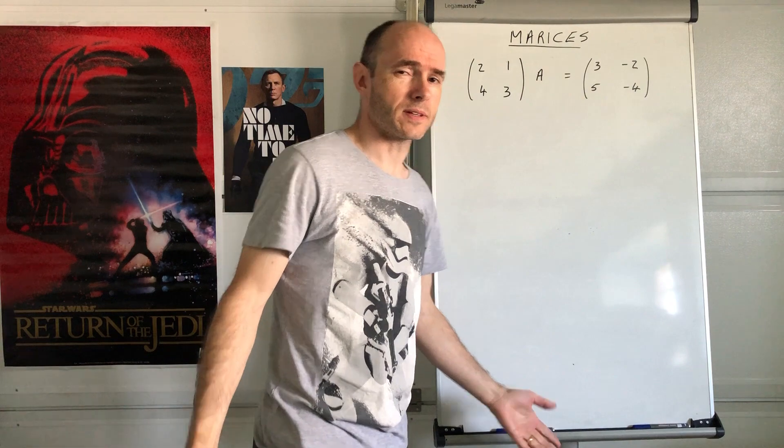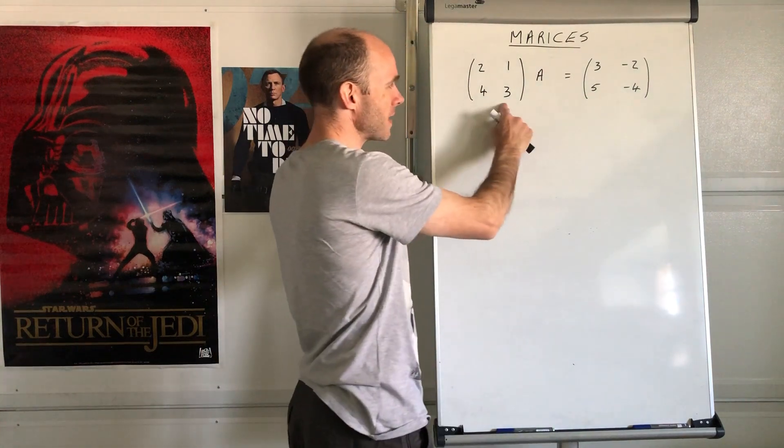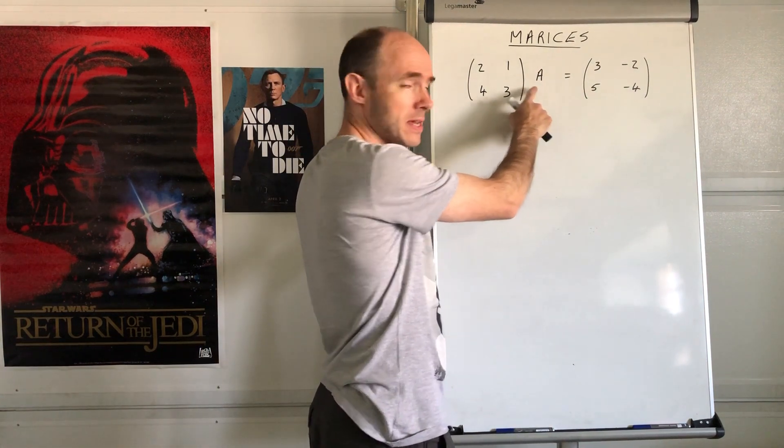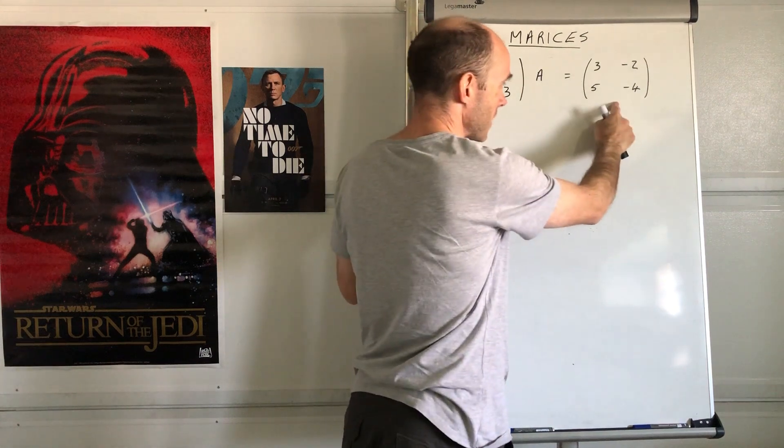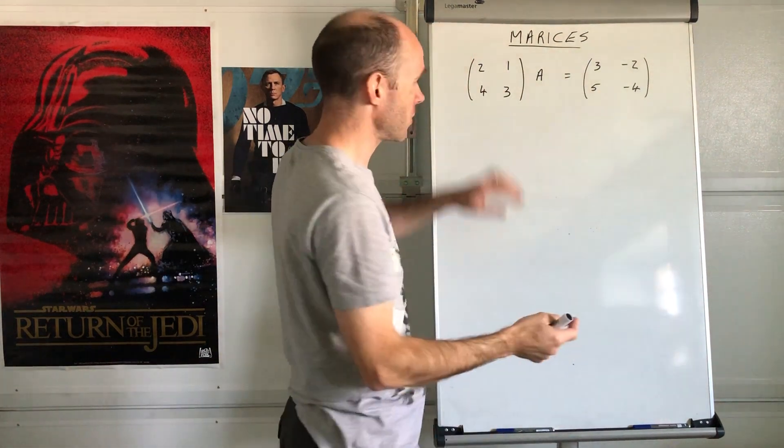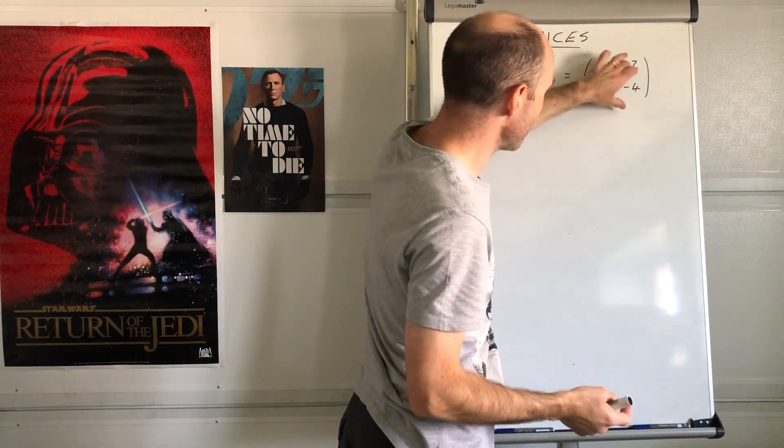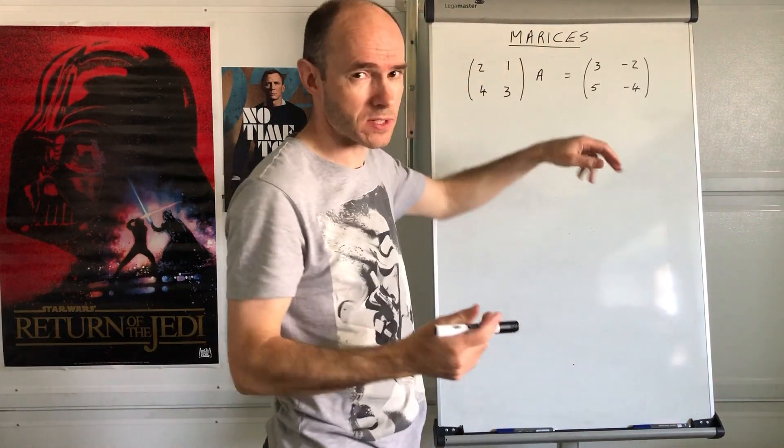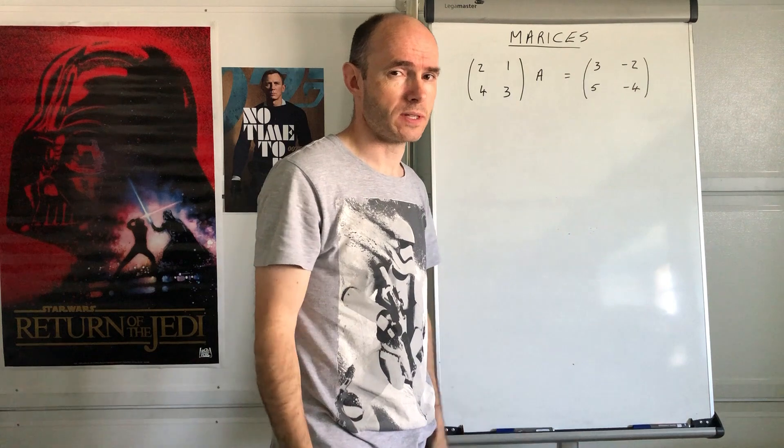Alright, so here's a question. Suppose you're told that this matrix multiplied by matrix A gives you that matrix. How do you find out matrix A? So you've got this matrix times another one equals that. How do you use matrix A? Remember there's no division.